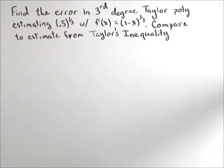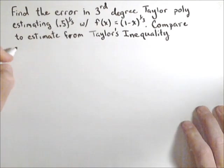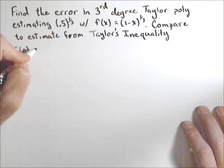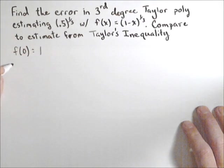The first thing we're going to do is find our Taylor polynomial. So we need some coefficients. We need f evaluated at zero. Well, f(x) here is (1-x)^(1/3), so it's actually just 1.